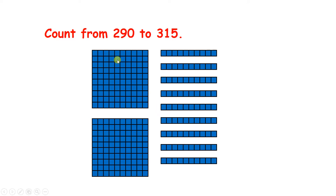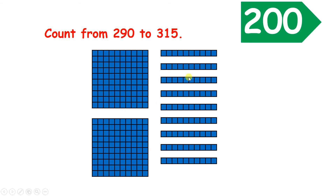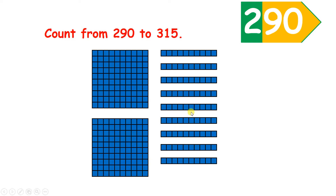Now let's count from 290 to 315. This is more difficult because here we're counting through a multiple of 100. We have two hundreds and nine tens, so we have 290.